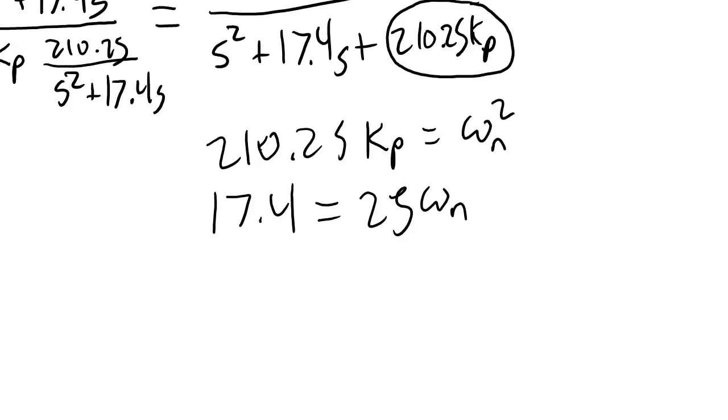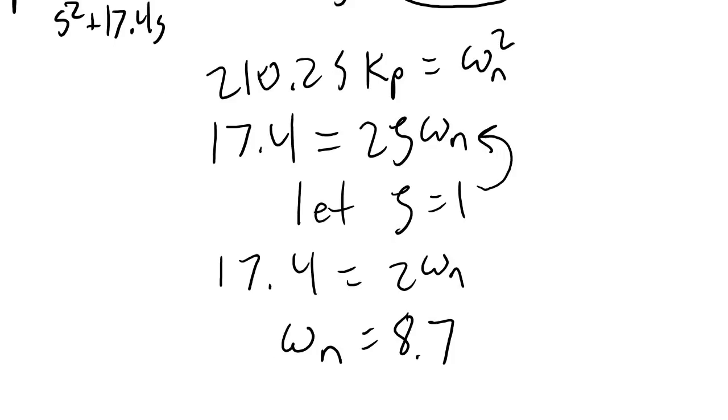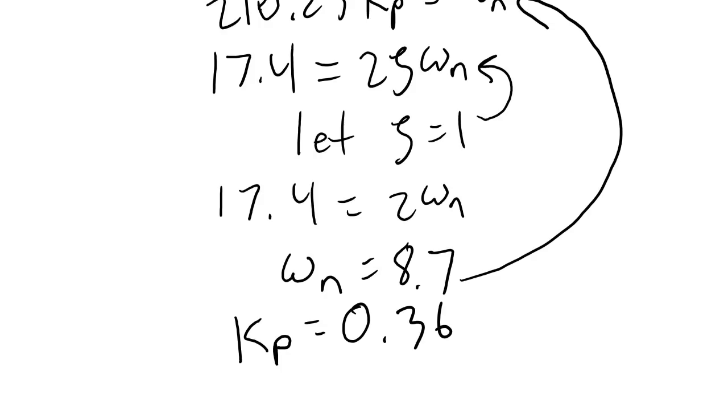Well, let's suppose that we want to have a critically damped system. Critical damping, we know, occurs when zeta is equal to 1. So let's let zeta equal 1. And then I'm going to plug that back into this equation. And then I'll solve for omega n. Once I have a value for omega n, I'll plug it back into this equation up here, and I'll solve for kp.